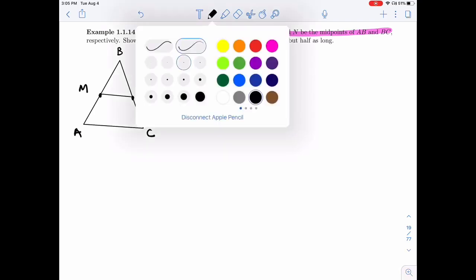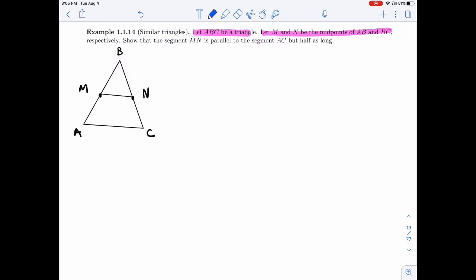Let me use color. I'm going to use color to draw the vectors that I want, that I care about. So MN is this vector here, and we also care about AC.